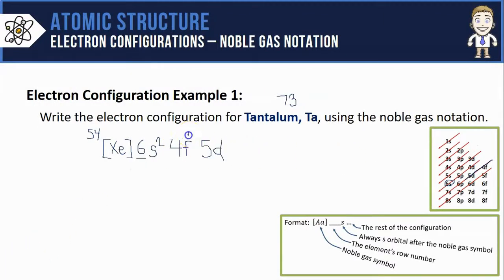My f orbitals can hold 14 total electrons. So far, 54, 56, 70 electrons have been accounted for, which means my five d's only have to hold three electrons. Here's my final noble gas notation for tantalum.